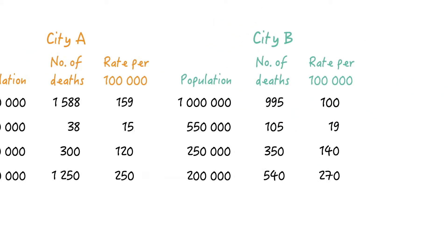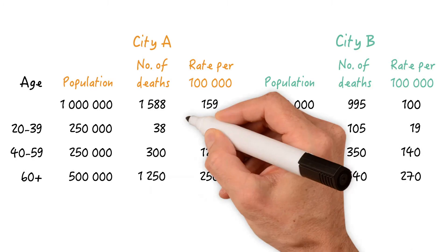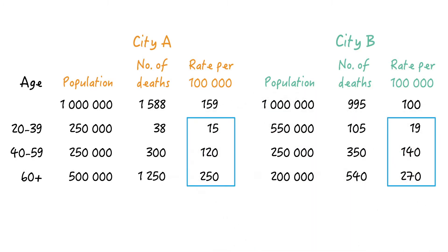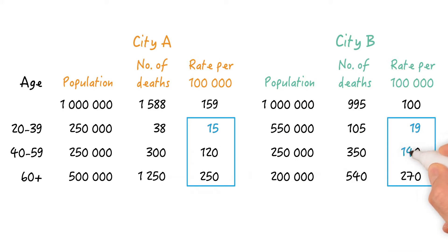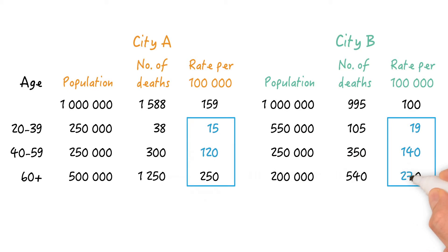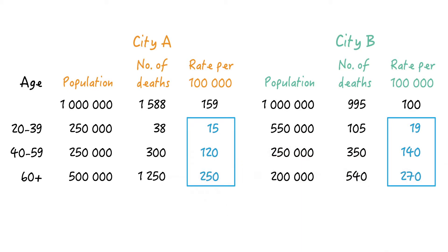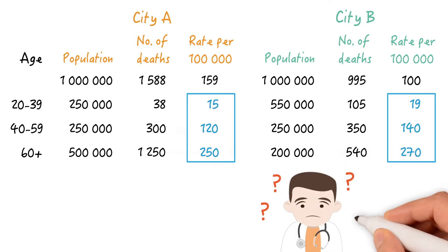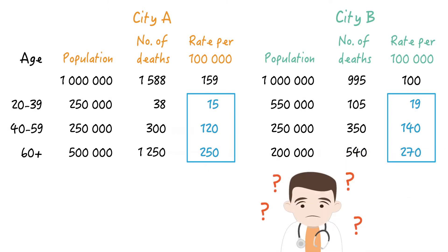So let's look at the age-specific death rates in both of them. Now you see a very different picture. The age-specific death rates are actually higher in City B for all age strata: 19 versus 15 for the 20-to-39 age group; 140 versus 120 for the 40-to-59 year olds; and 270 versus 250 for the age group of 60 and above. So why is the overall mortality rate higher in City A, whereas all age-specific death rates are higher in City B?